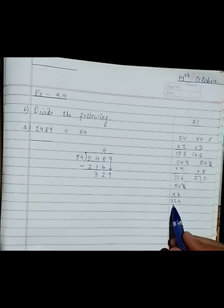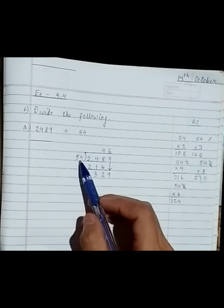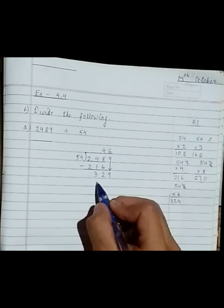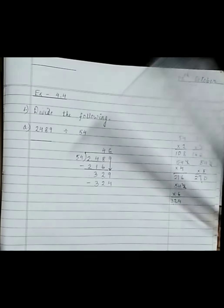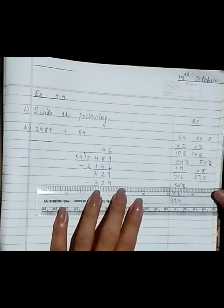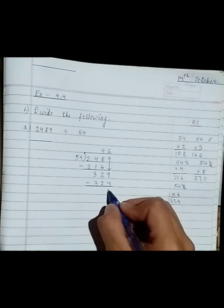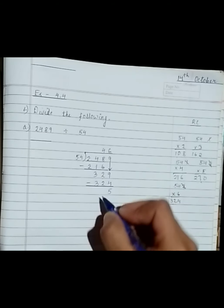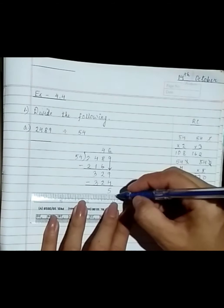We can confirm that 324 is the nearest number in the times table of 54 to 329, so we write 6. 54 into 6 is 324. Subtract 324 from 329: 9 minus 4 is 5, 2 minus 2 is 0, 3 minus 3 is 0. So we have remainder 5.